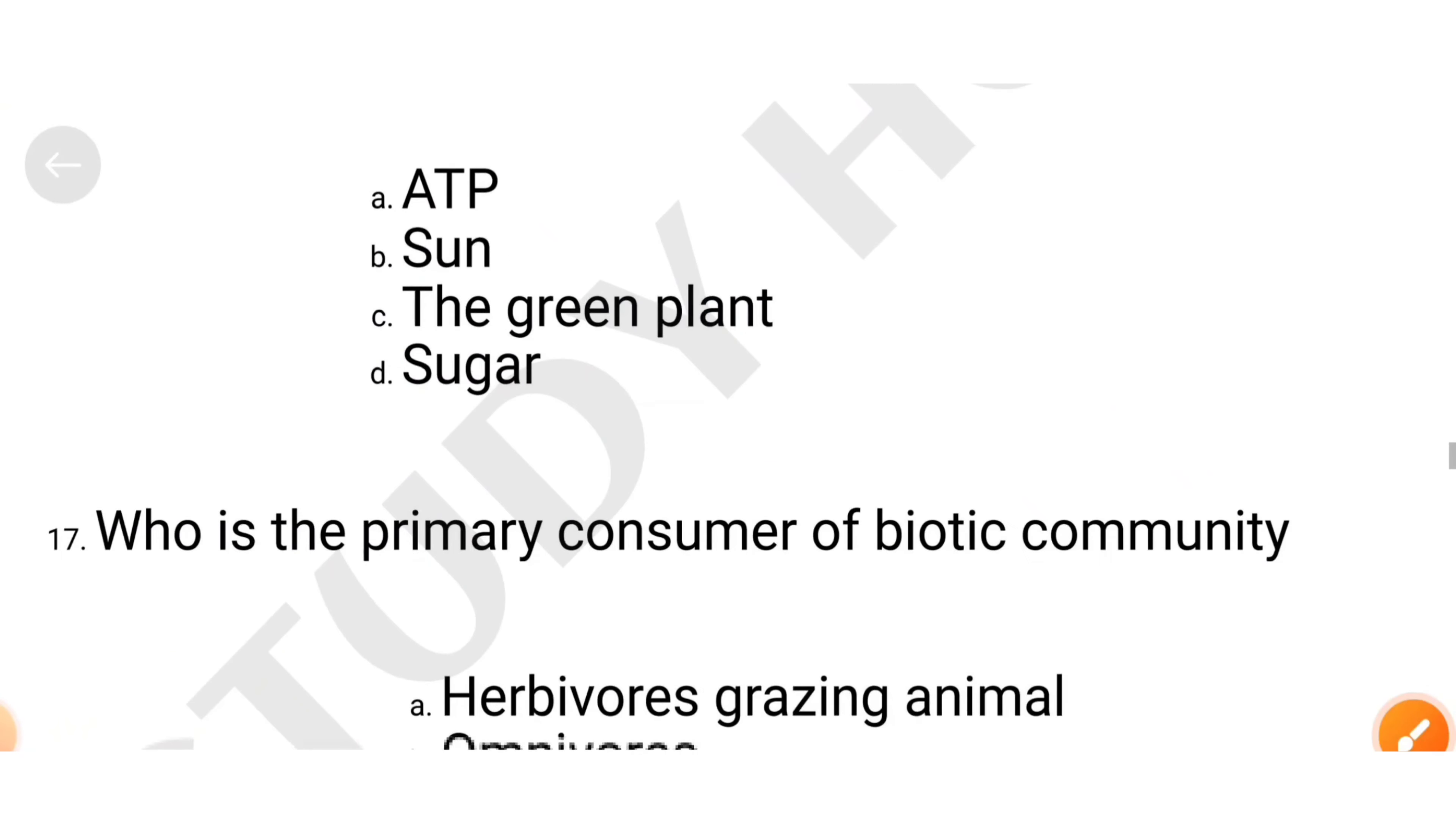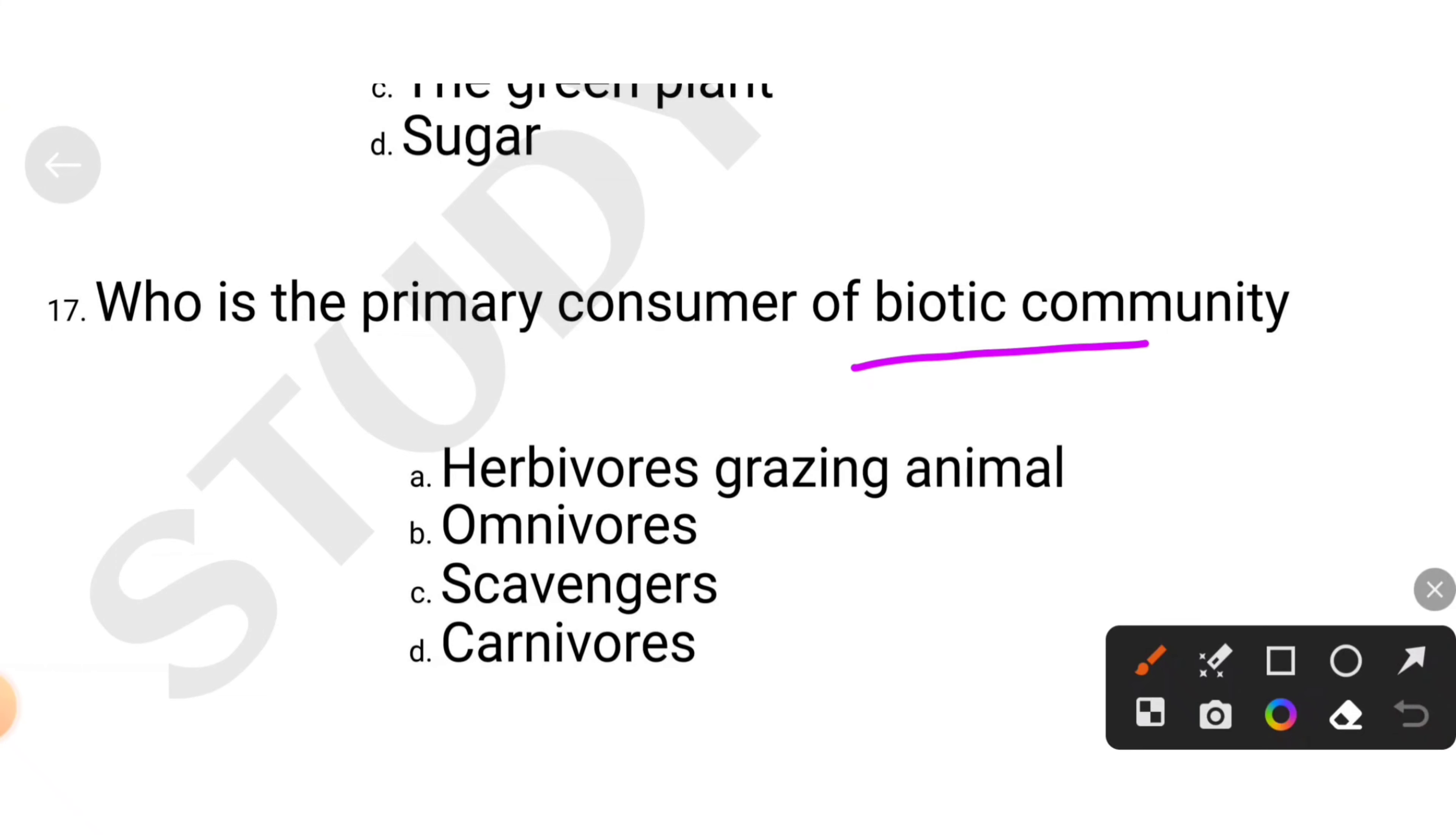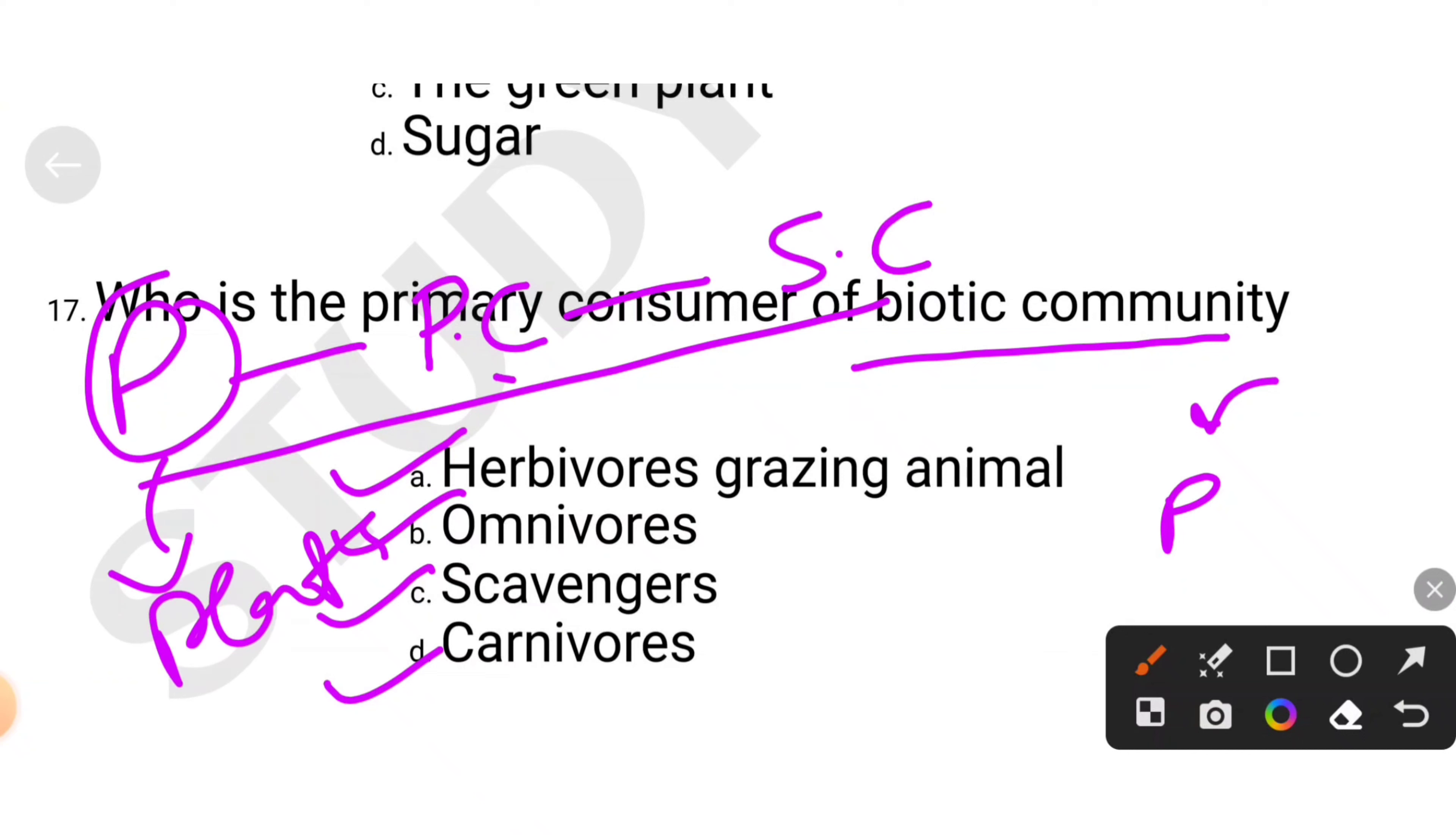Who is the primary consumer of biotic community. Primary consumer, secondary consumer, who acts on the producers. What is the primary consumer? Plants are the producers, and what acts on the plants? Herbivores grazing animal. Omnivores, they eat secondary. Scavengers, carnivores. The answer is herbivores, grazing animal.